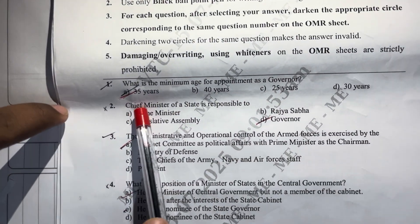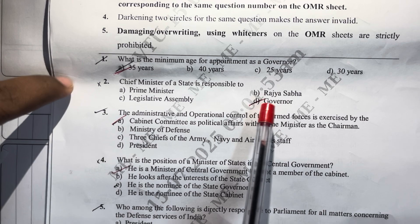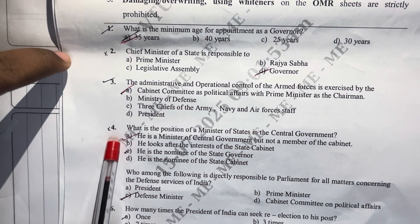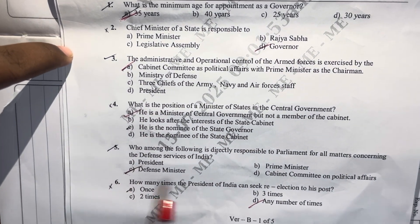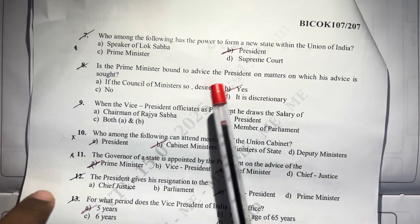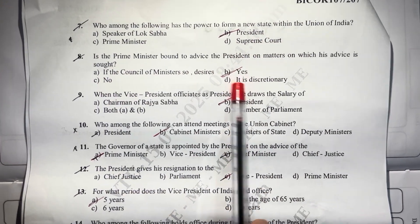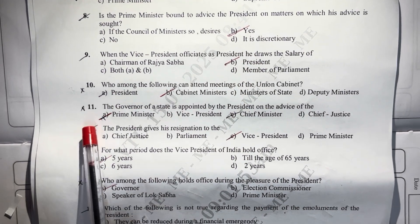The first question answer is A. Second question answer is D. Third question answer is A. Fourth question answer is A. Fifth question answer is C. Sixth question answer is D. Seventh question answer is B. Eighth question answer is B. Ninth question answer is B. Tenth question answer is B.